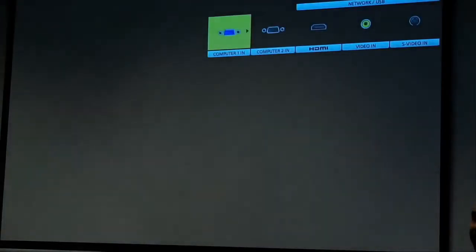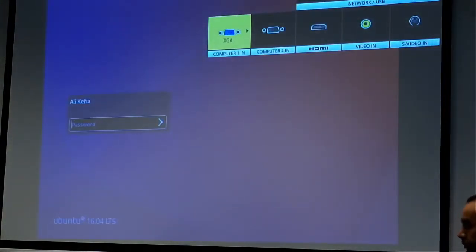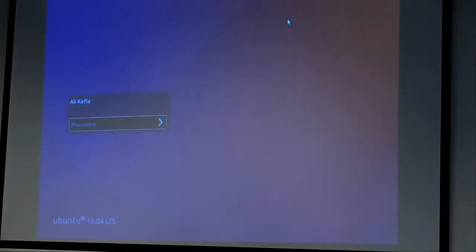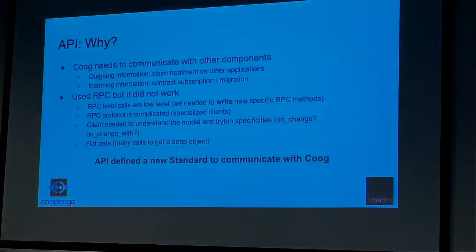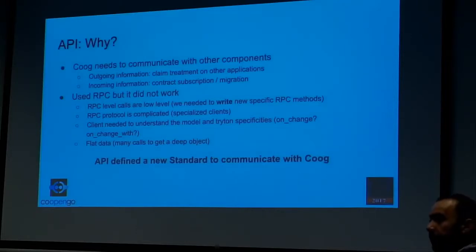The main idea is that if we want to call Triton with RPC, we need to understand the model, the protocol, the meaning of all variables, and the business logic behind them — and this is exactly what we don't want third parties to have to do. We want people to just launch a call, do some work, and get the result. Our target is to have endpoints that are simple to use and work at a business level, not at the object and model level. API today is used in production for at least two or three customer deployments, and it's the standard way to access Kug or Triton.